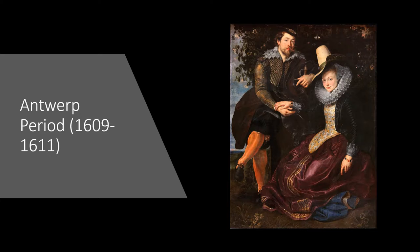Antwerp Period: The Antwerp Period was from 1609 to 1611. During this time, he learned his mother died while he was in Rome. In 1609, he married Isabella Brant. Around this time, he painted Rubens and his wife in the Honeysuckle Arbor.